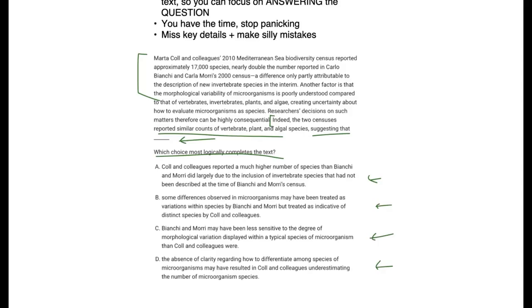But if you looked at the context here, you can see that there's actually some major disparities in terms of what the census actually saw. So this one group had 17,000, which was nearly double the other group. And it says it was only partly attributable to the description of new vertebrate species. So we know it can't be A. And then this here is interesting. It says right here, this is right before that end conclusion that you might have skipped to is this important detail.